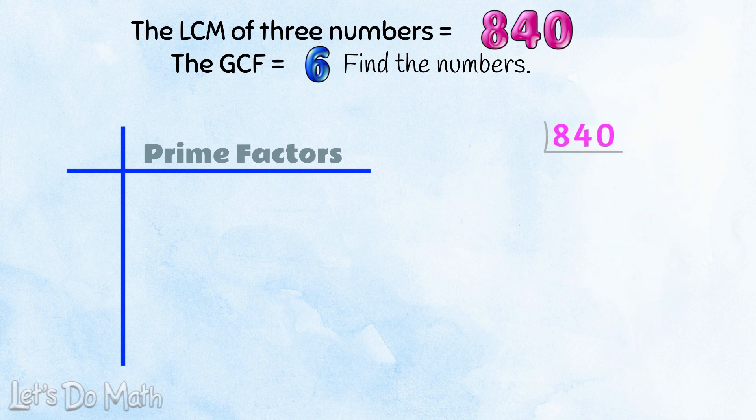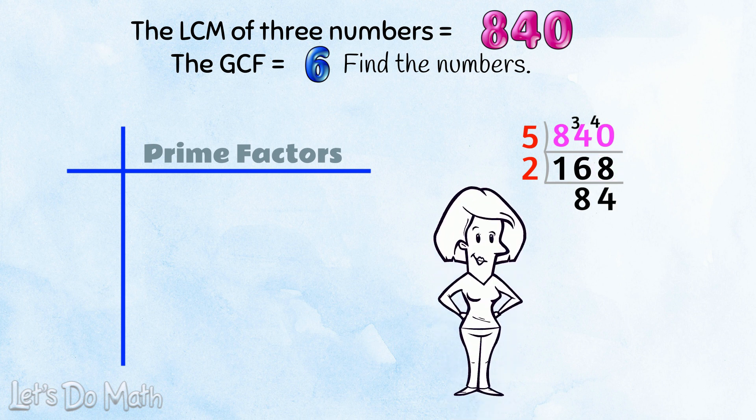I start by dividing. This is the remainder of 4. 5s into 40? 8 5s are 40. 168, it's even! I'm going to divide by 2. 2s into 16? 8 2s are 16. 2s into 8? 4 2s are 8. 84!